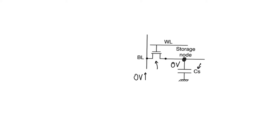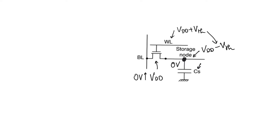Assuming we want to store a high value VDD, we drive VDD on the bit line and then enable the word line. Because we are using an NMOS access transistor — and the reason we use NMOS is to promote density — the maximum storage value at the storage capacitor is going to be VDD minus V_threshold, unless we drive the word line at VDD plus V_threshold, in which case it will store VDD. When the word line is disabled again, this storage node holds its value in high-impedance state.